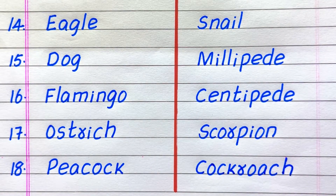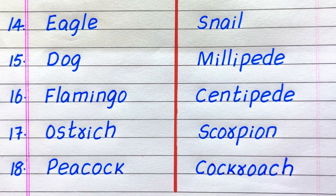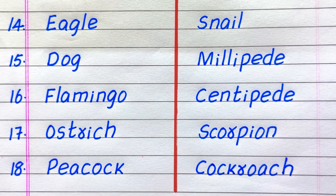14th example of a vertebrate animal is eagle, 15th dog, 16th flamingo, 17th ostrich, 18th peacock.